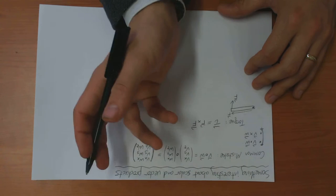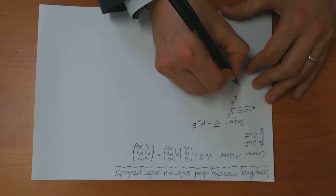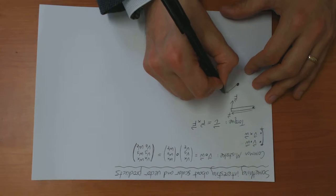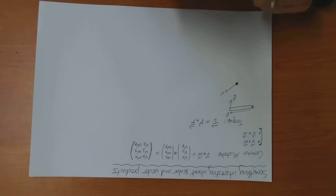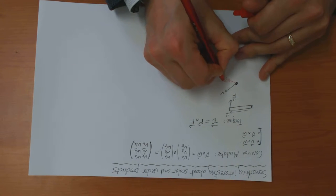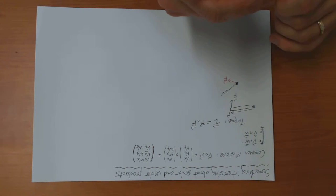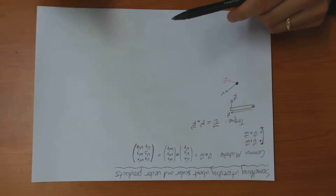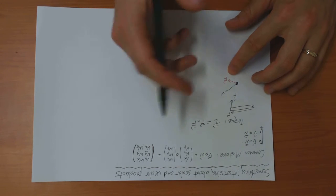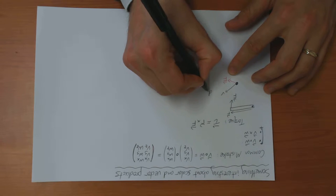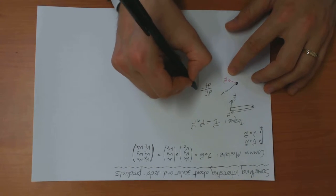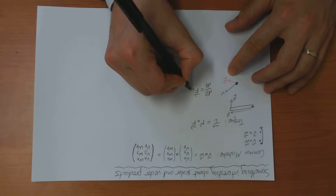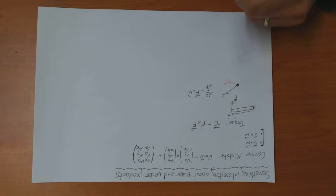An example of where you might use the scalar product, let's suppose I've got a particle which is moving with some velocity V, and I apply a force to this particle F, and I want to know how fast does the particle change its kinetic energy. Because I apply a force, it's accelerating. And then the rate of change of kinetic energy of the particle is equal to the force vector scalar product the velocity vector.